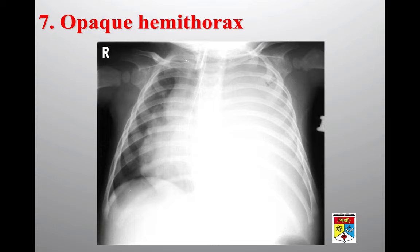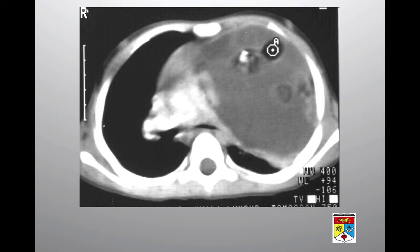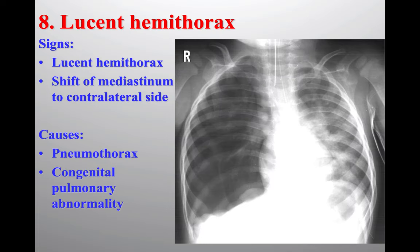Ultrasound revealed a solid mass in this case. CT scan showed a solid mass arising from the mediastinum — the mediastinal vessels including the right and left pulmonary trunks are visible, and the mass arises from the lateral aspect of the left mediastinum, appearing solid with calcification and a fat component. These features indicate a teratoma — this is a case of mediastinal teratoma.